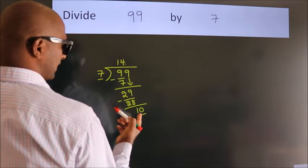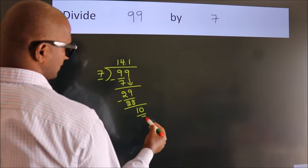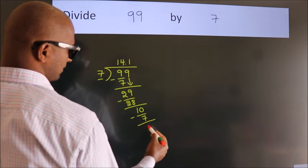A number close to 10 in the 7 table is 7 once, which is 7. Now we subtract and get 3.